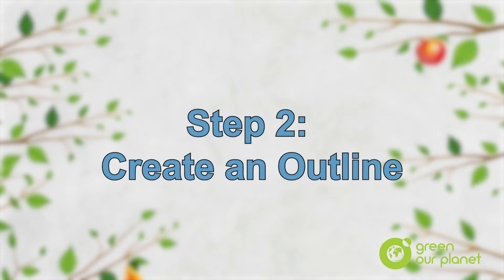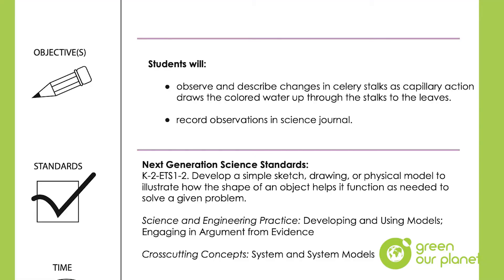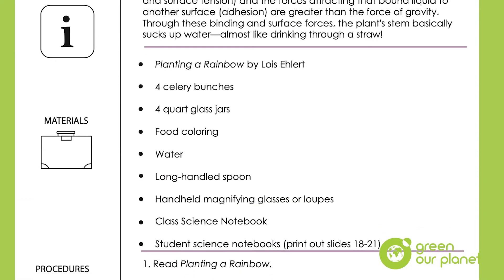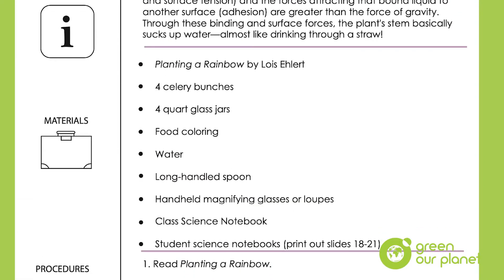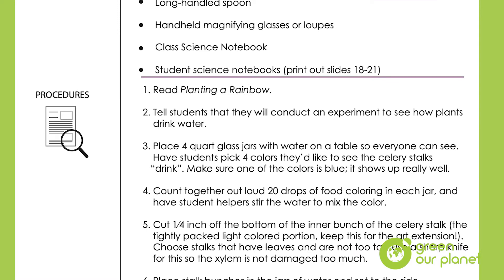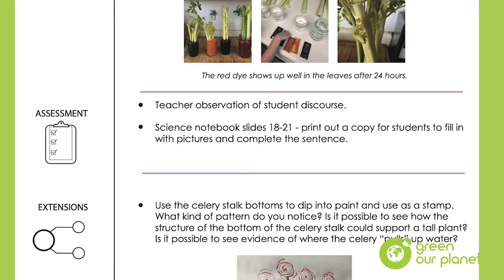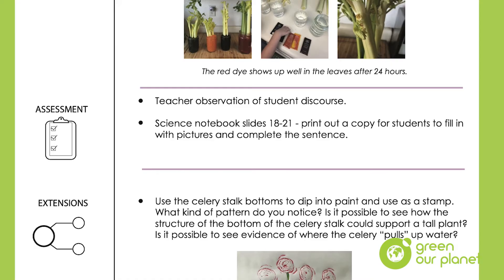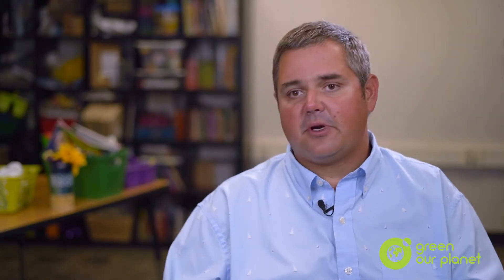The next step is to create an outline that would have my standards, my student objectives, my materials that I need, and my assessment component — did the students understand what I'm trying to teach them? That's pretty much what my outline would have: a basic five steps — what do I need to make this lesson successful so I can move forward?